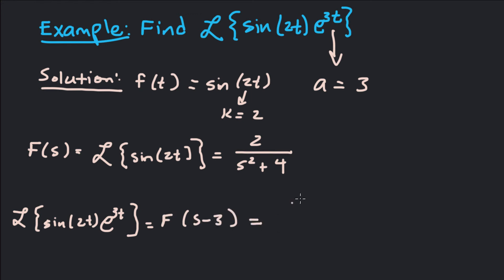Which is going to be, now just plug in s minus 3 right here for s. So that's going to be 2 over s minus 3 squared plus 4.